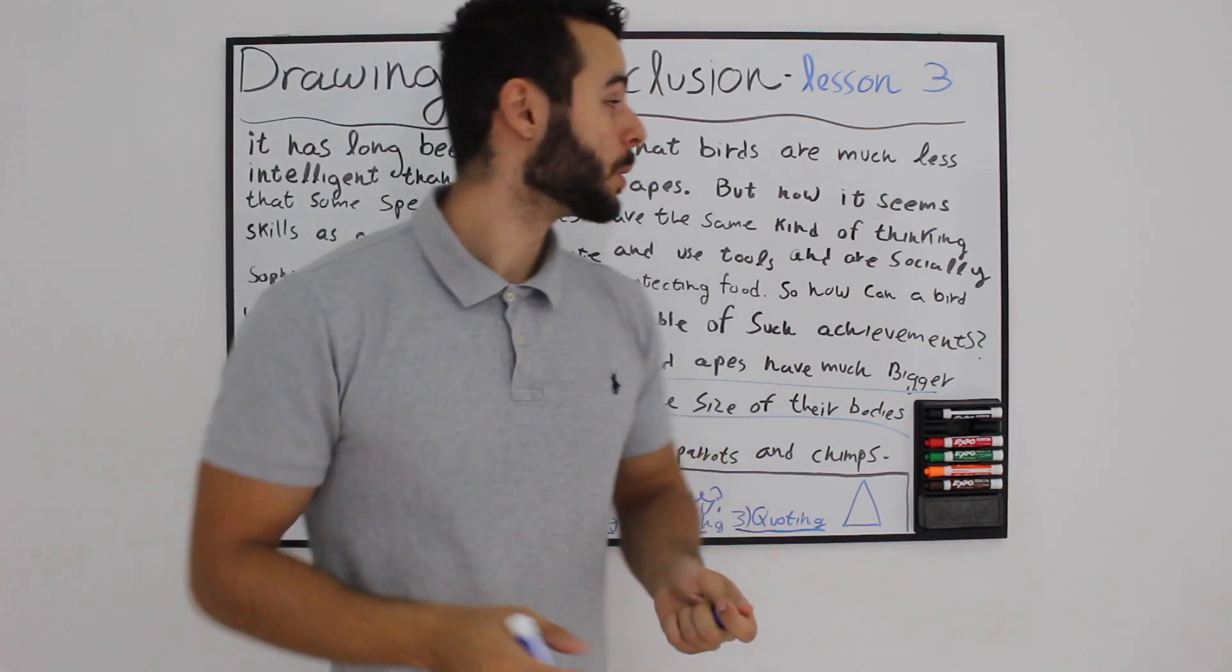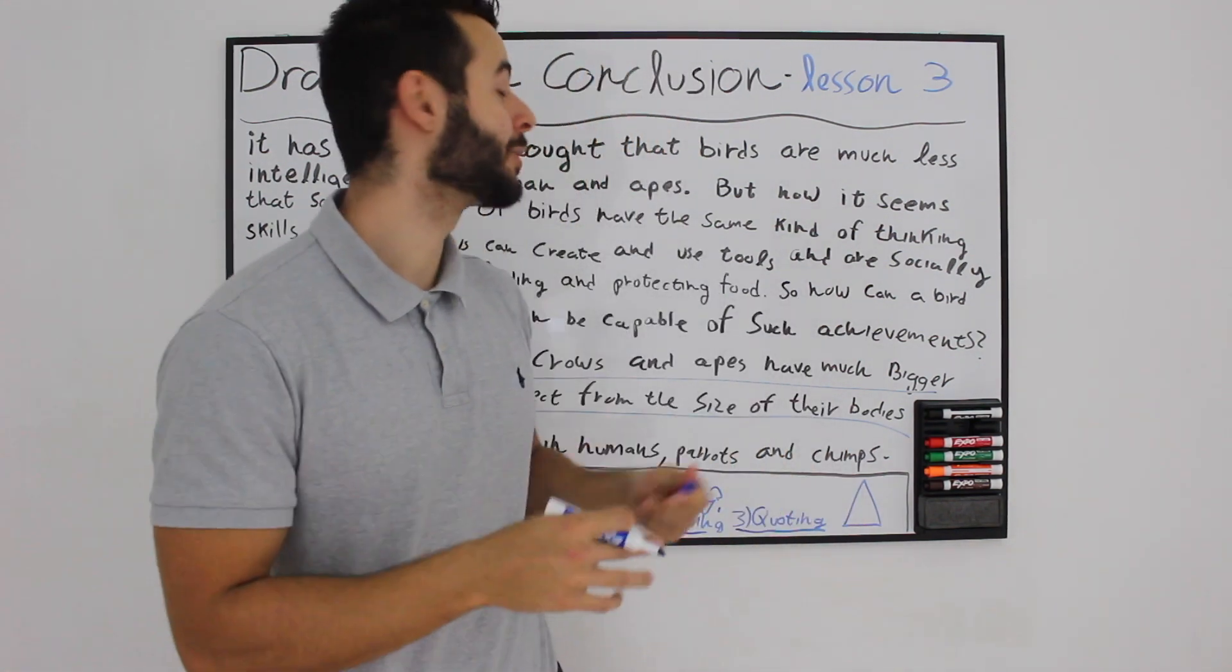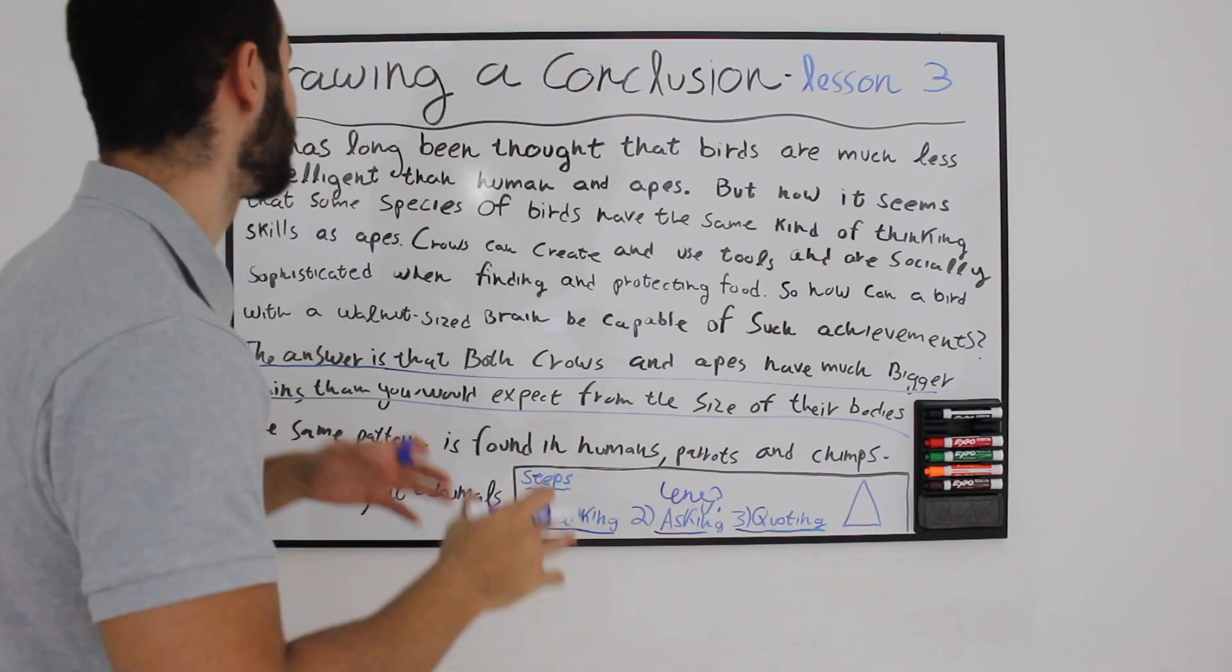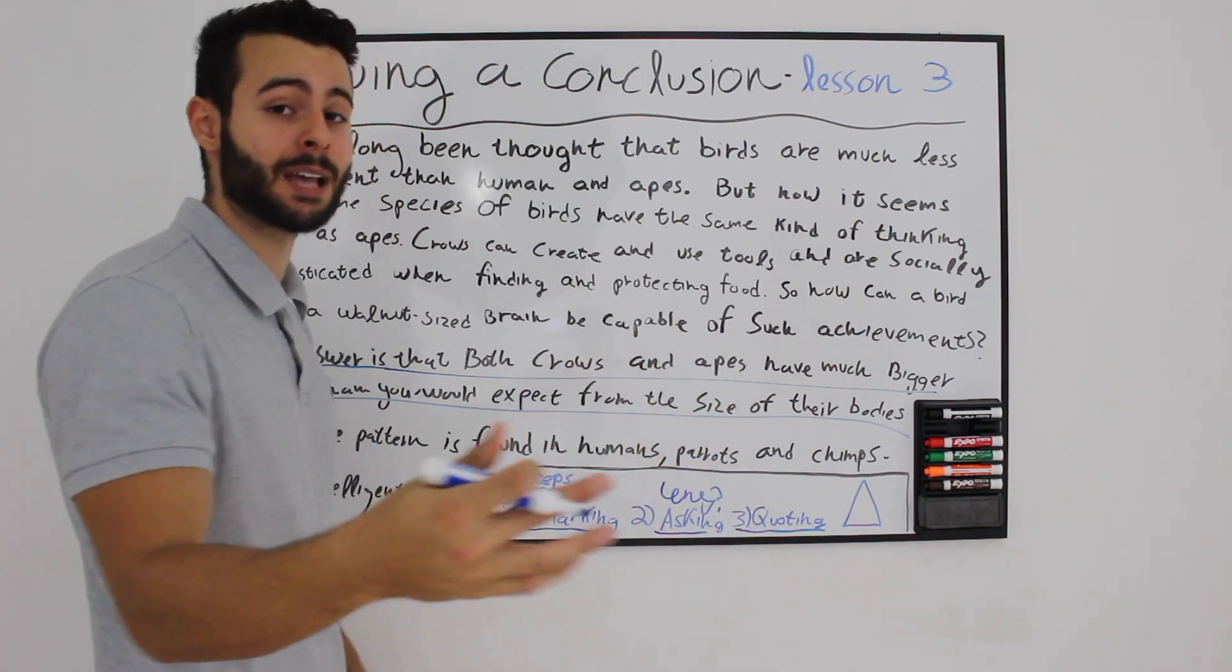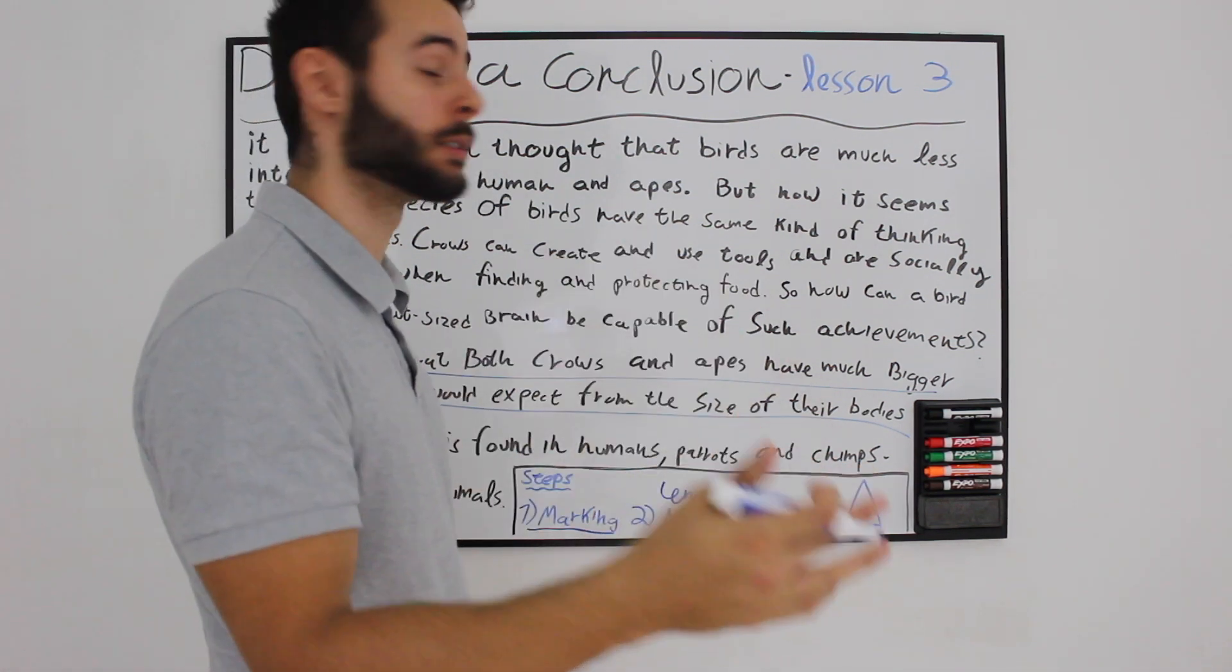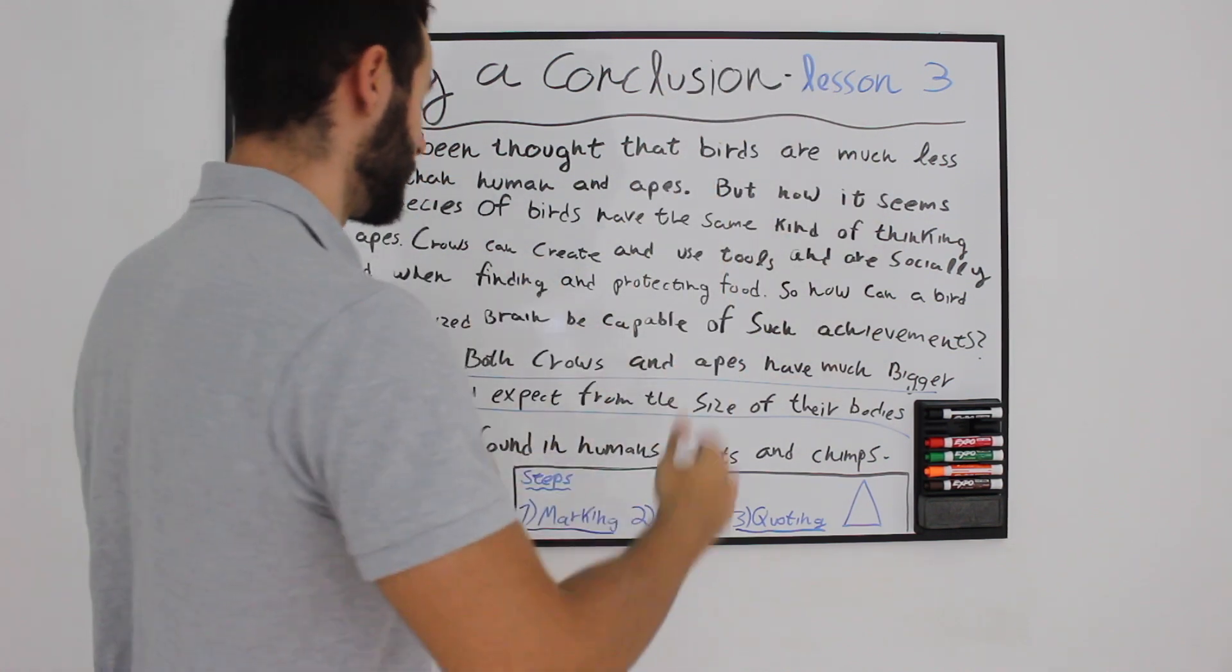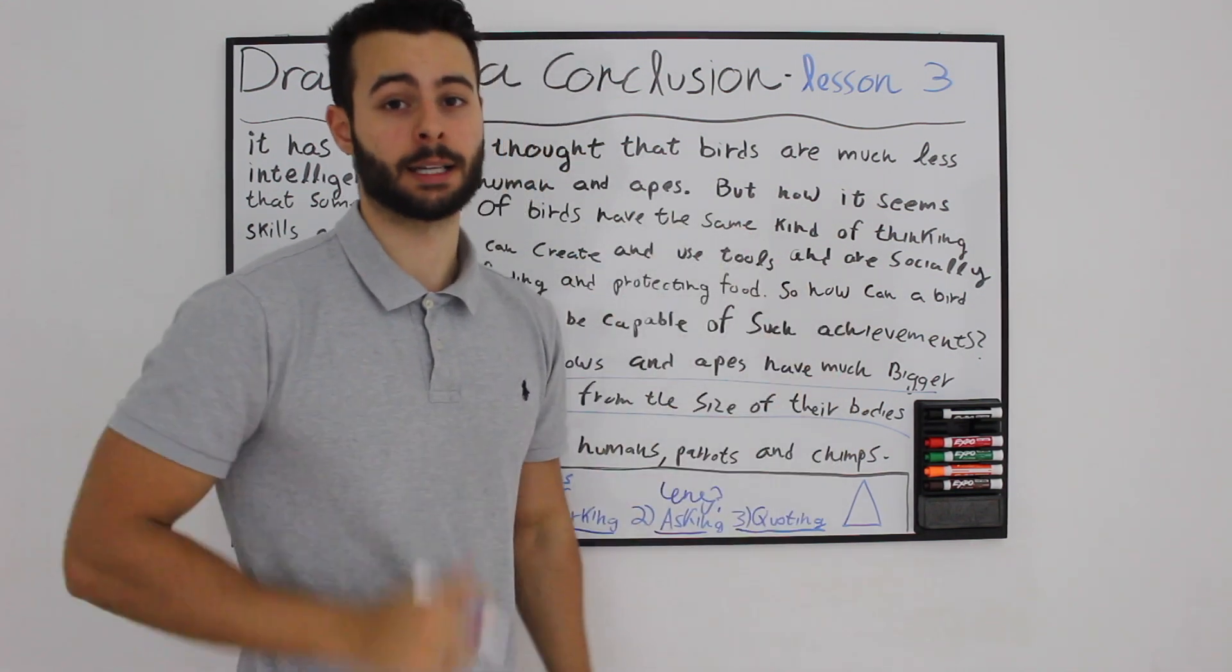In the previous lesson we were talking about how to find an assumption that the writer of the paragraph assumed was obvious to him. But today we are going to actually find something from inside the text. Unlike assumption, which is never inside the text, we are going to find something from inside the text that you can quote to find the answer itself.